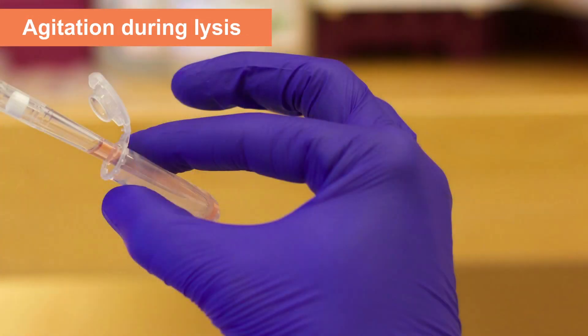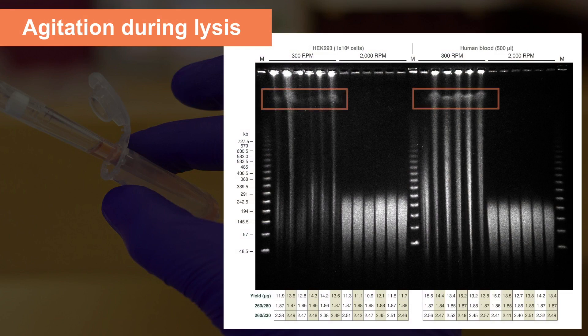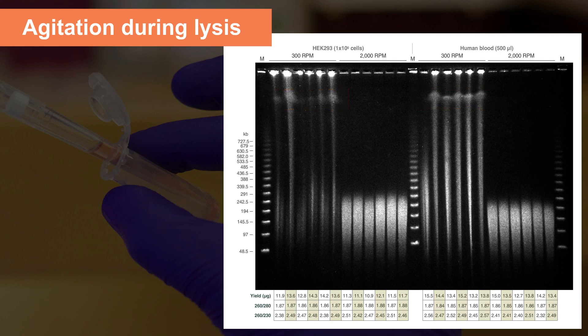During the lysis steps, samples are agitated using a thermal mixer. The speed of agitation determines the fragment length of the DNA. Low or no agitation produces very large DNA ranging into the megabases, while high speeds produce short fragments in the range of 50 to 250 kilobases.